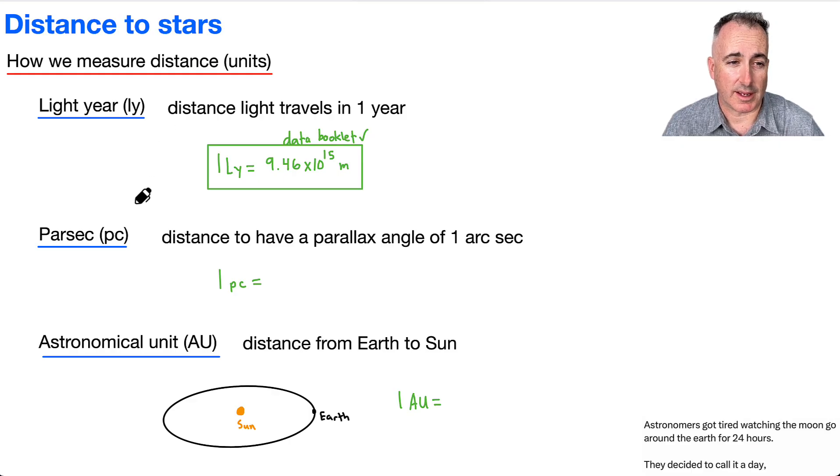Next we have a parsec, written as pc for short. That's the distance to have a parallax angle of one arc second. That's why we literally call it a par for parallax and sec for one arc second—parsec. One parsec equals 3.26 light years.